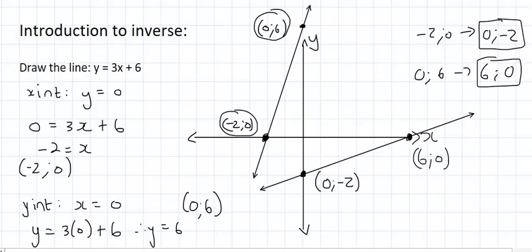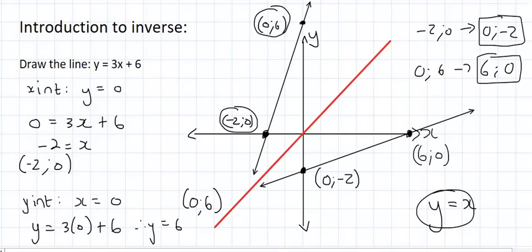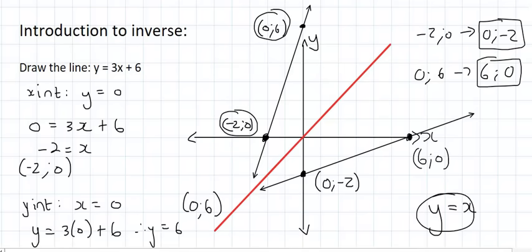Another very interesting aspect is that these two lines are actually going to be a reflection of each other — not across the x-axis, not across the y-axis, but across the line y equals x. Do you remember that line from previous grades? We can clearly see that the original and the inverse are reflected across that line. So all that inverses are, are actually reflections across the line y equals x.